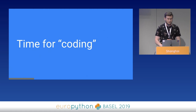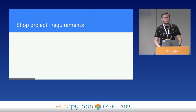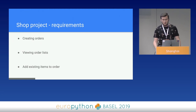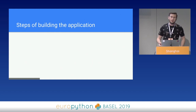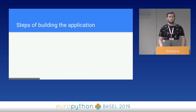It's time for coding. We create a simple microservice with three responsibilities — three use cases: create order, view order list, and last but not least, our most important feature, the cash cow — adding an existing item to order. I'd like to show the code that I prepared for the demo you will see later, and this code is based on a real production application.